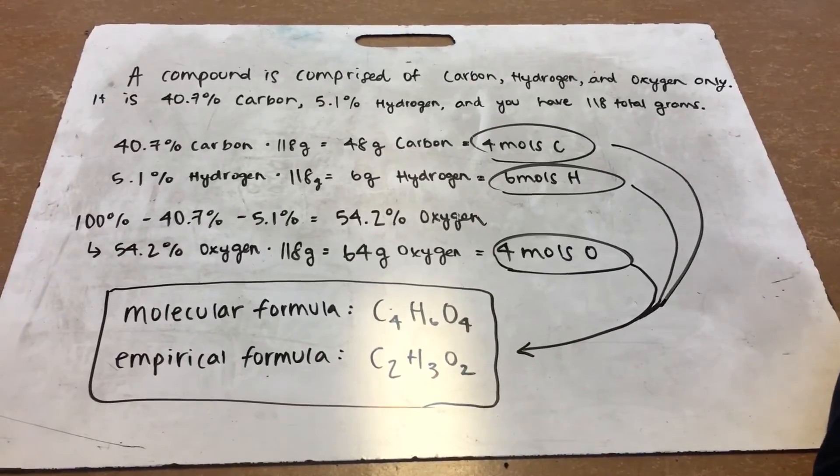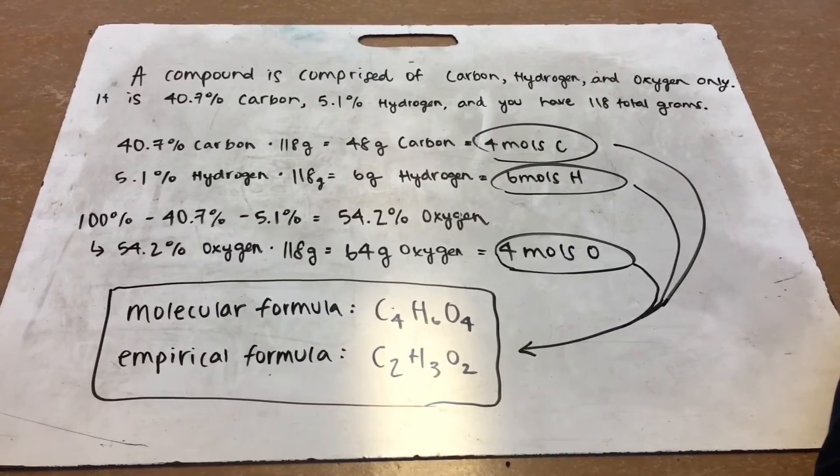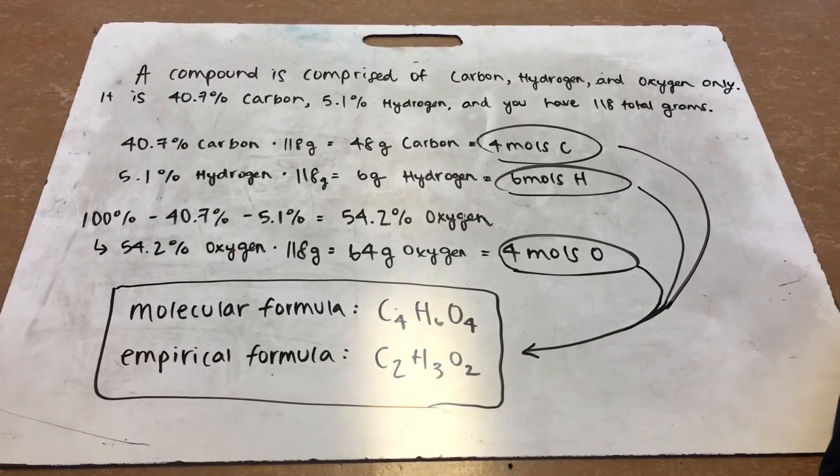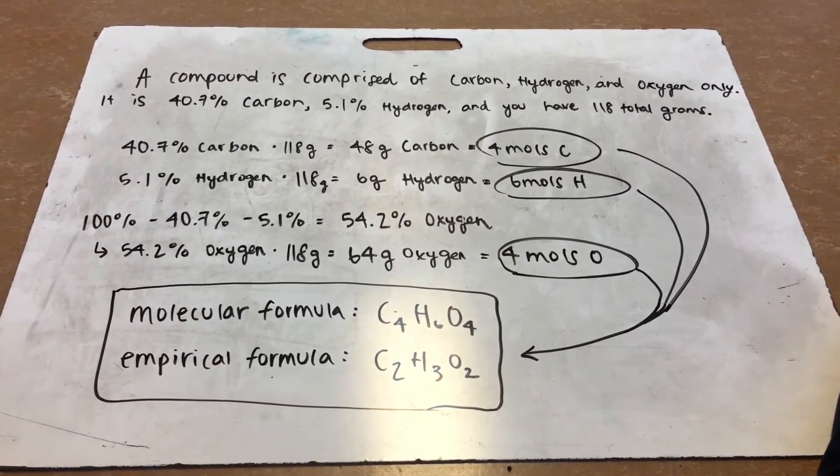So now you're left with 4 moles of carbon, 6 moles of hydrogen, and 4 moles of oxygen. So your molecular formula is C4H6O4.